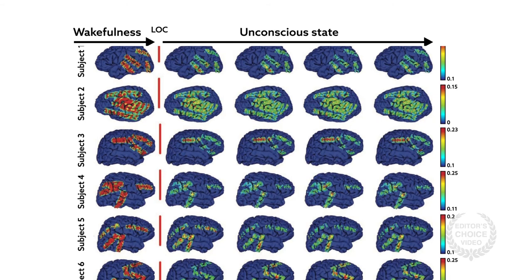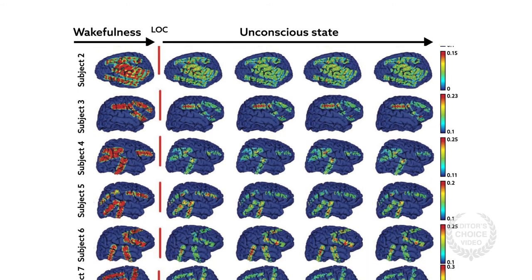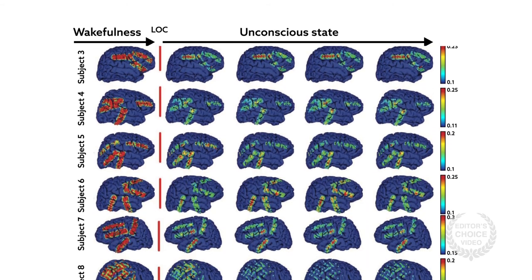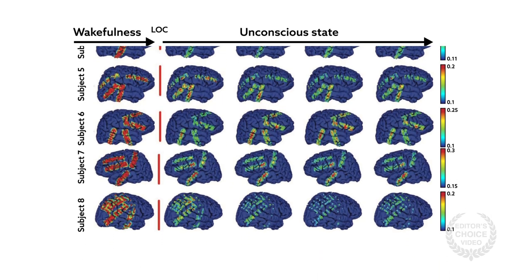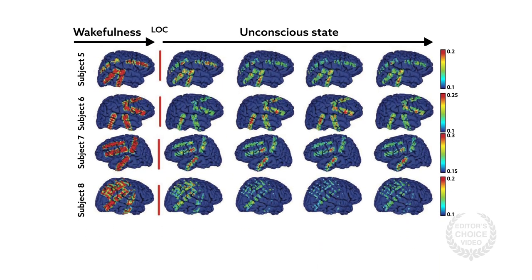The results are consistent with the scalp EEG studies and suggest a decrease in information integration and network complexity with anesthesia. This disruption of normal neural information may be responsible for loss of consciousness.